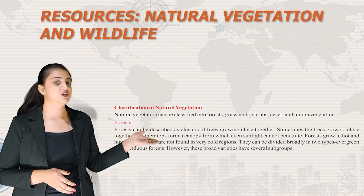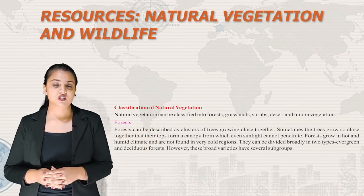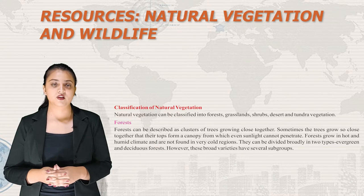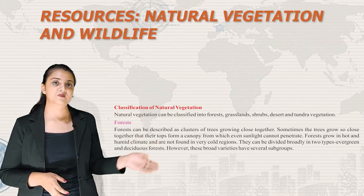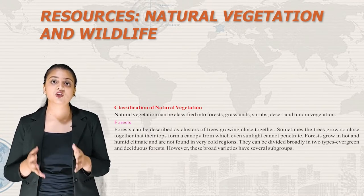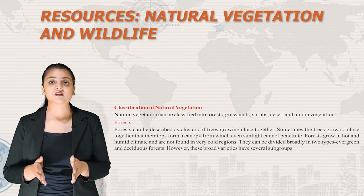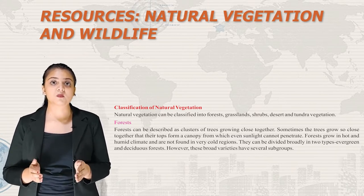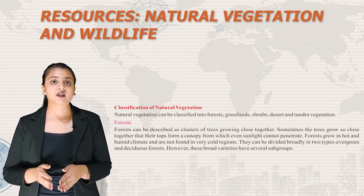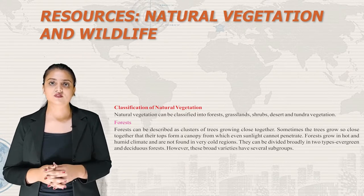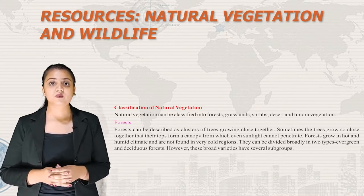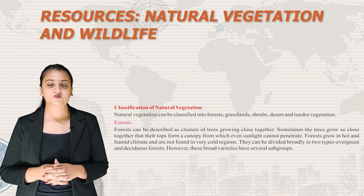Natural vegetation can be classified into forests, grasslands, shrubs, desert and tundra vegetation. Forests can be described as clusters of trees growing close together. Sometimes trees grow so close that their tops form a canopy through which sunlight cannot penetrate. Forests grow in hot and humid climates and are not found in very cold regions. They can be divided broadly into two types: evergreen and deciduous forests, each with several subgroups.